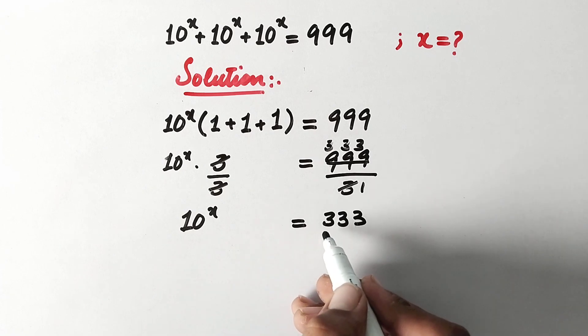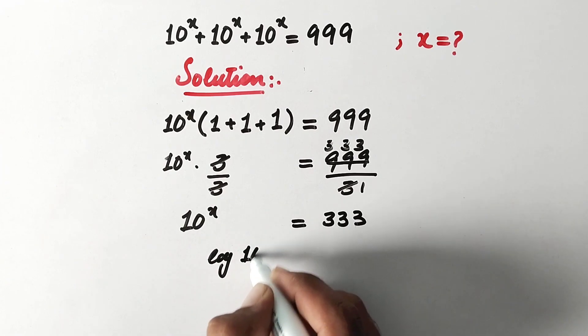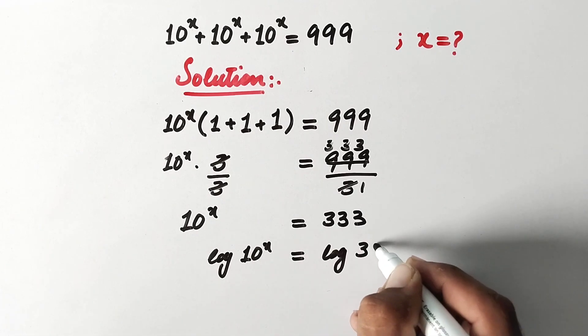And now what we will do next is we will take common log on both sides of equation. So here it will be log of 10 to power x equals log of 333.